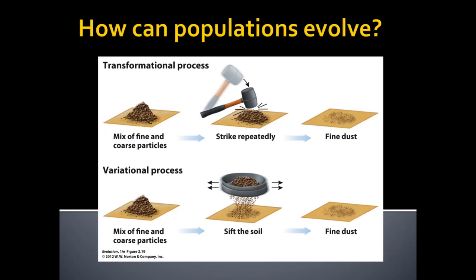The third of the big three is genetic drift — changes through a selection process that is completely random, due to chance. The technical term in science is stochasticity. It is the unpredictability of what gets passed on due to sampling error and population size. So: number one is mutation — transformational; number two is natural selection — variational; number three is genetic drift — also variational. Mutation, natural selection, genetic drift.